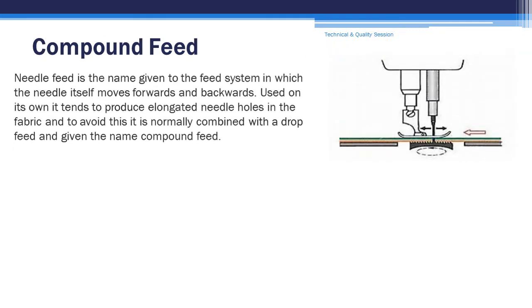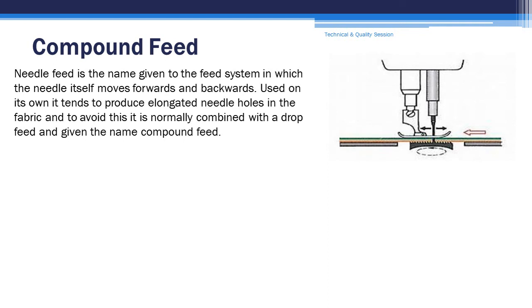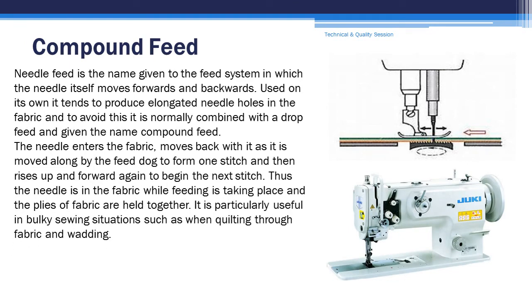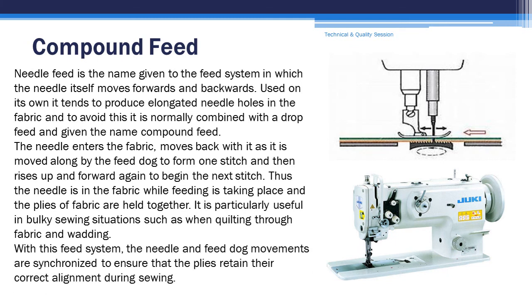Compound feed. Needle feed is the name given to the feed system in which the needle itself moves forwards and backwards. Used on its own, it tends to produce elongated needle holes in the fabric, and to avoid this it is normally combined with a drop feed and given the name compound feed. The needle enters the fabric, moves back with it as it is moved along by the feed dog to form one stitch, and then raises up and forward again to begin the next stitch. Thus the needle is in the fabric while feeding is taking place and the plies of fabric are held together. It is particularly useful in bulky sewing situations such as when quilting through fabric and wadding. With this feed system, the needle and feed dog movements are synchronized to ensure that the plies retain their correct alignment during sewing.